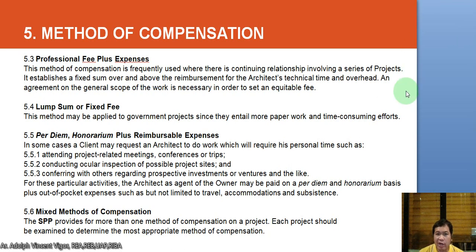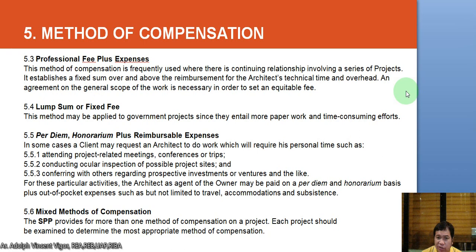Regarding per diem and reimbursable expenses: in some cases, the owner may request the architect to do work requiring personal time, such as attending project-related meetings, conferences, or trips, conducting ocular inspections of project sites, and conferring with others regarding prospective investments or ventures. For these activities, the architect is paid on a per diem and honorarium basis, plus out-of-pocket expenses such as travel, accommodations, and subsistence. The SPP provides more than one method of compensation, and each project should be examined to determine the most appropriate method.